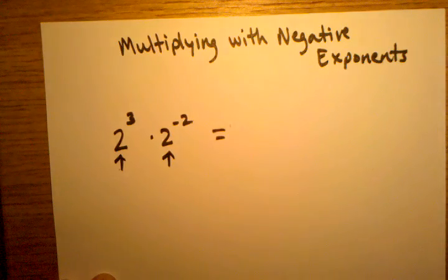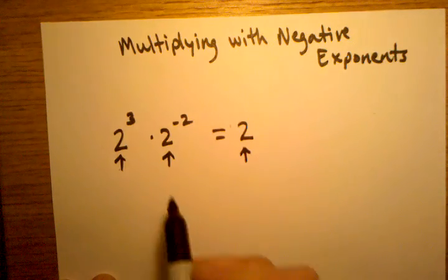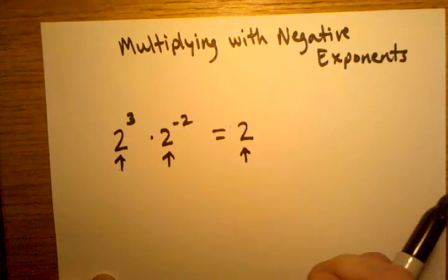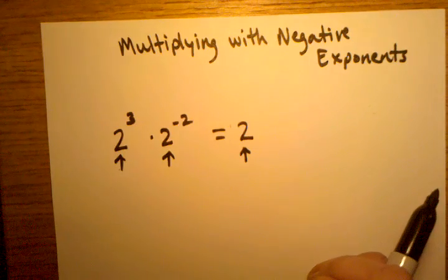they each have the same base. Then we can use our trick of taking that base in our answer and just adding up the exponents to find out how many 2's we're going to end up multiplying.